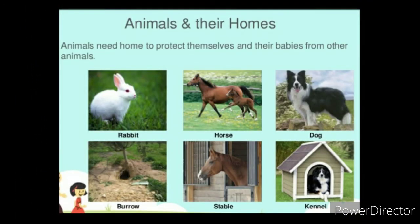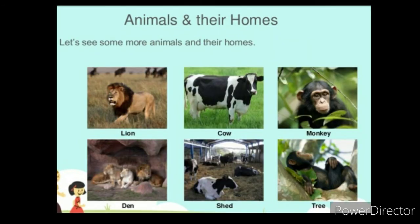Now we are going to see about animals and their homes. Rabbit lives in a burrow, horse lives in a stable, dog lives in a kennel, lion lives in a den, cow lives in a shed, and monkeys live on the tree.